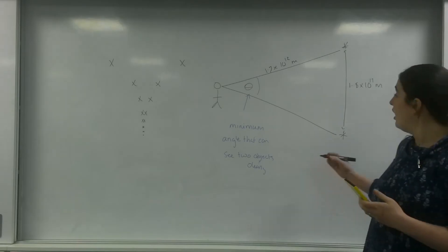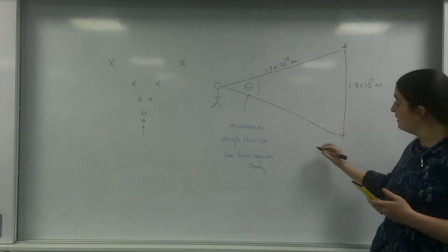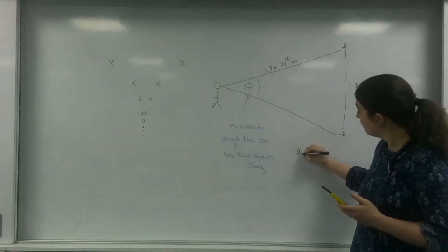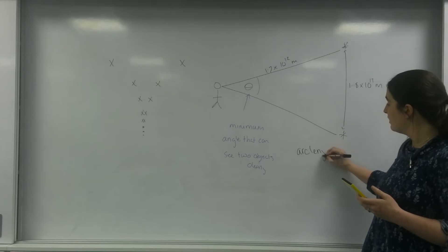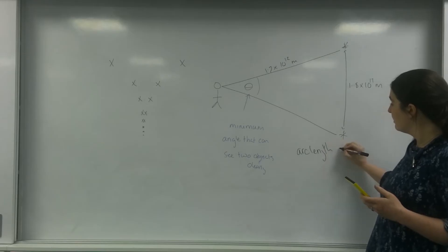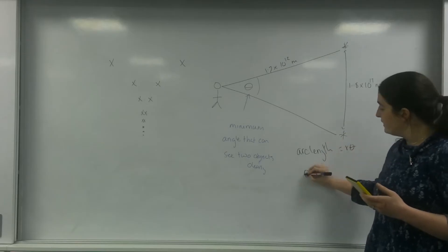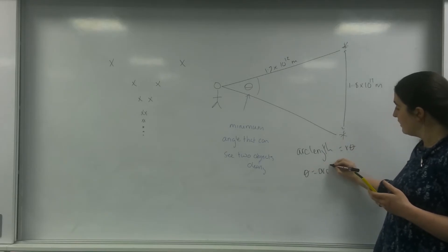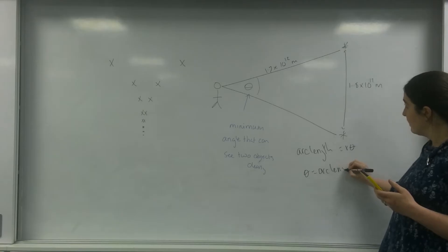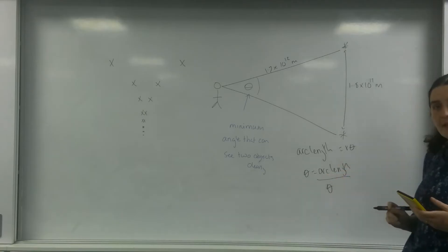Arc length is R theta, so theta equals arc length divided by R.